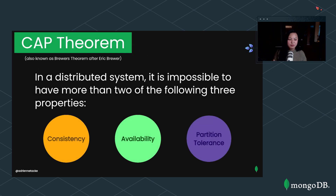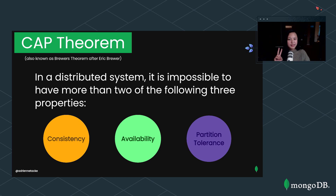We'll start with CAP theorem, also known as Brewer's theorem from Eric Brewer. This theorem states that in any distributed system, out of three properties — consistency, availability, and partition tolerance — at most we can only have two. Two of the three can only exist at one time, though we can argue about that a little later.